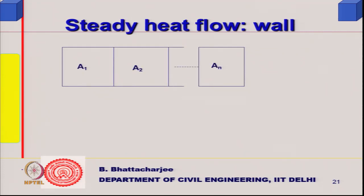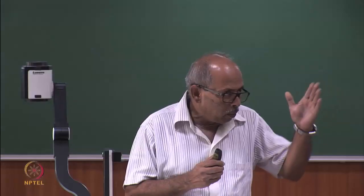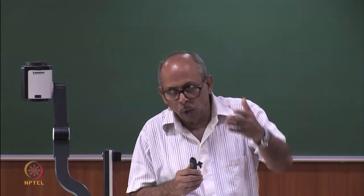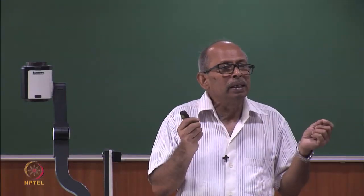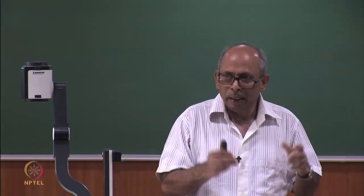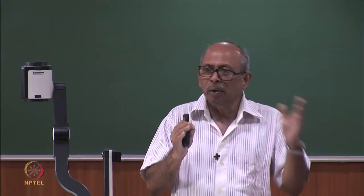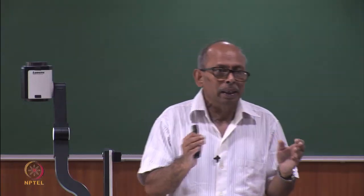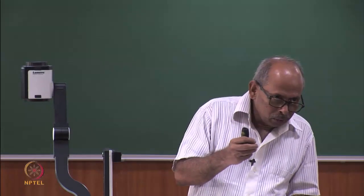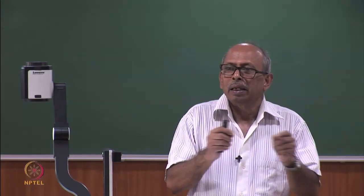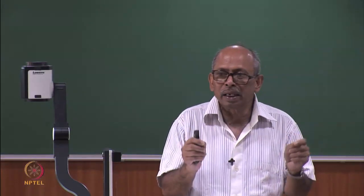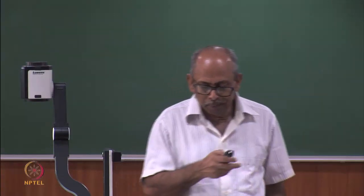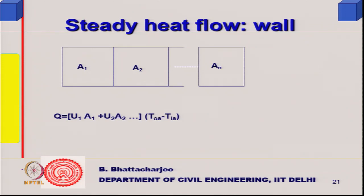For example, if you consider a room it will have a wall with a window and another wall. If I consider 6 surfaces where outside temperature is constant and inside is constant, the temperature across the wall is constant and the temperature gradient is the same. Analogous to electrical circuits, when the potential across resistances is the same, it is basically a parallel arrangement. In such a situation the heat flow Q would be given by U1·A1 + U2·A2, and so on.